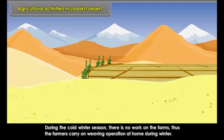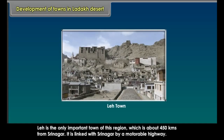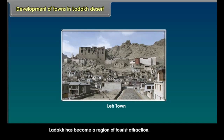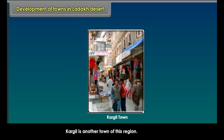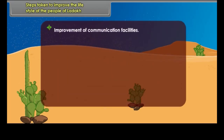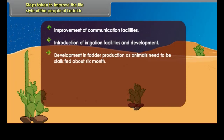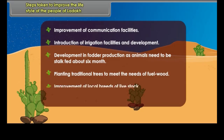During the cold winter season, there is no work on the farms, so farmers carry on weaving operations at home. Leh is the only important town of this region, about 450 kilometers from Srinagar, and is linked with Srinagar by a motorable highway. Ladakh has become a region of tourist attraction. Kargil is another town of this region. Steps taken to improve the lifestyle of the people of Ladakh include: improvement of communication and irrigation facilities, development of fodder production, planting traditional trees for fuel wood, improvement of local livestock breeds, and development of road transport.